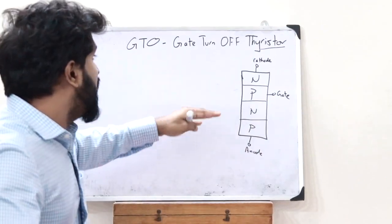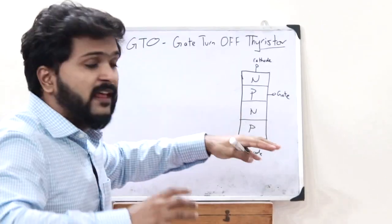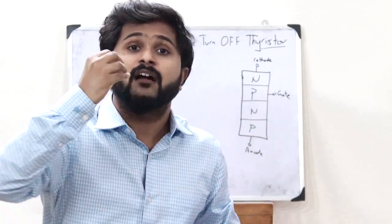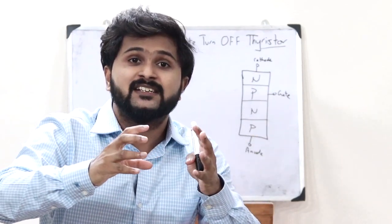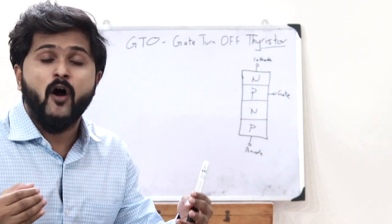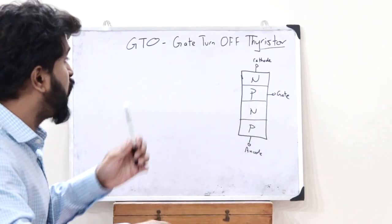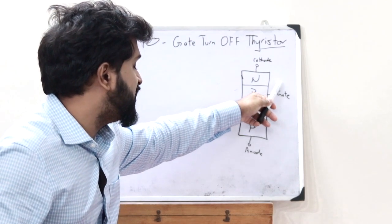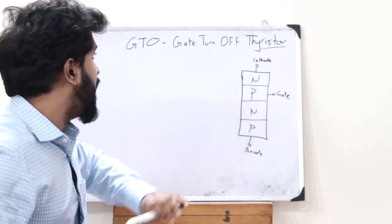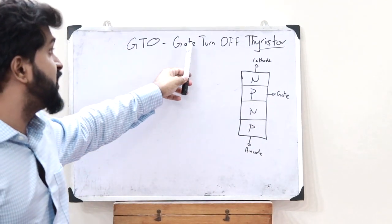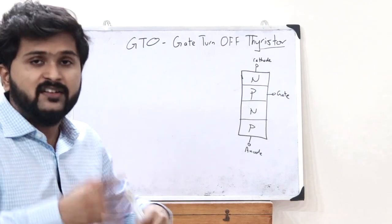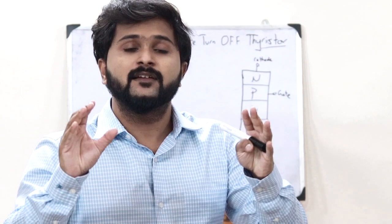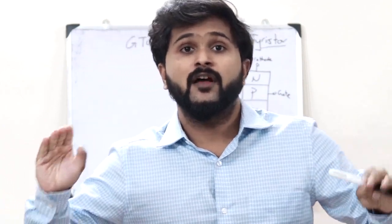A GTO is basically a thyristor that can function as a fully controllable switch. Here the on and off condition of the switch is controlled by whatever signal is given through the gate. That is why it is given the term Gate Turn Off Thyristor.